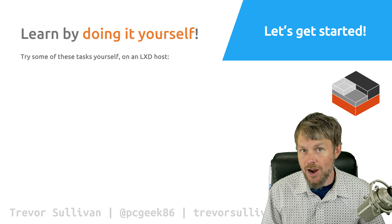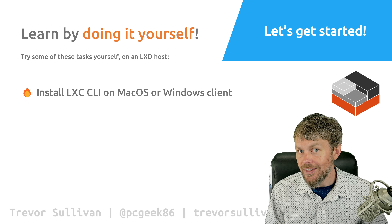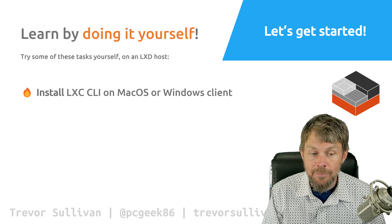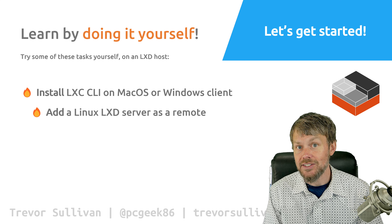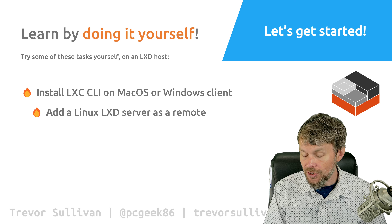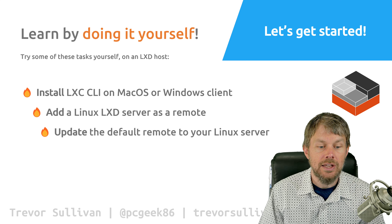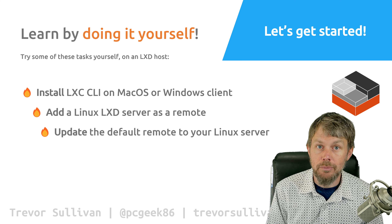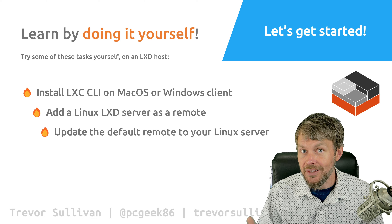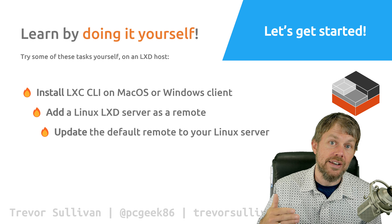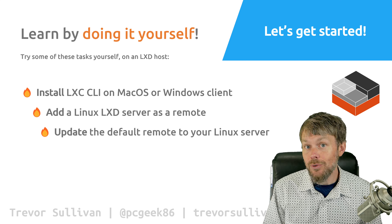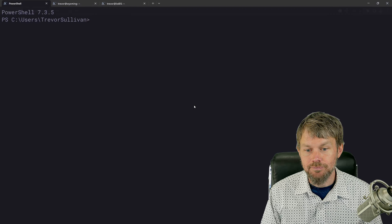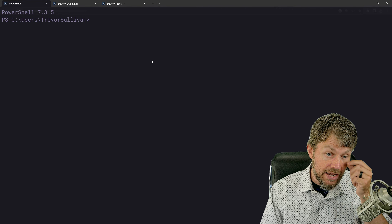So what are some tasks you can practice on your own LXD server to understand how remotes work? First, go ahead and install the LXC CLI tool on your macOS or Windows client — or on Linux if that's what you're using. Then add an LXD server as a remote, which we just stepped through — it's fairly straightforward. You can also update the default remote. If you run an LXC command, you do have to specify a remote under some circumstances, but if you do something like `lxc list`, the default remote will be used unless you specify an alternative.